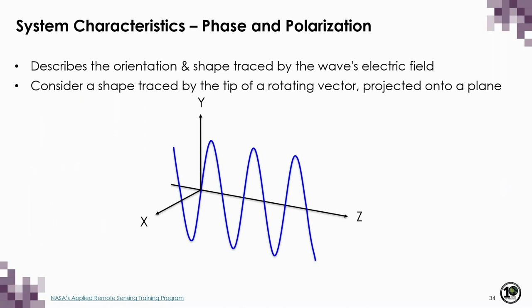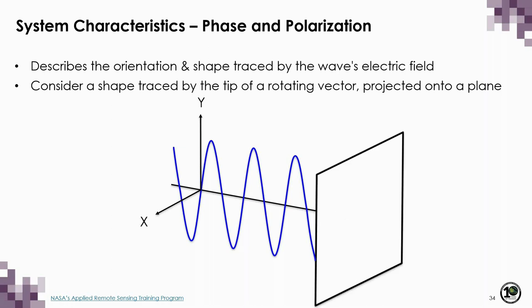Now that we know about phase, we can talk more in depth about polarization. Polarization describes the orientation and shape traced by the wave's electric field, and it is convention to consider the shape traced by the tip of the rotating vector projected onto a plane. For a wave with an electric field oscillating in the vertical direction, the path traced by the tip of the electric field vector would project as one vertical line — this is called linear vertical polarization.